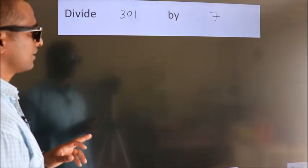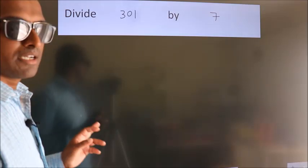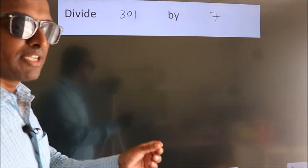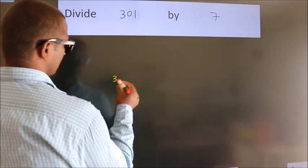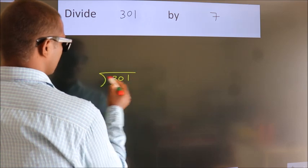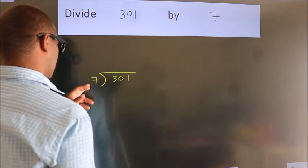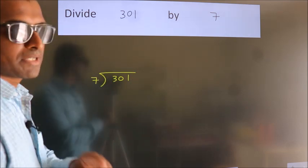Divide 301 by 7. To do this division, we should frame it in this way: 301 here, 7 here. This is your step 1.